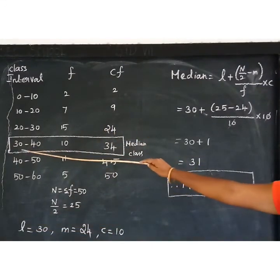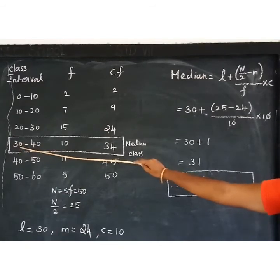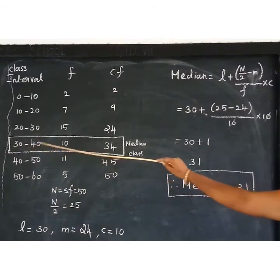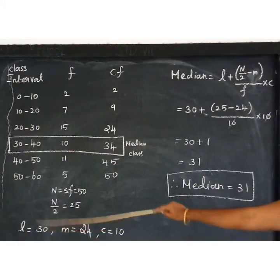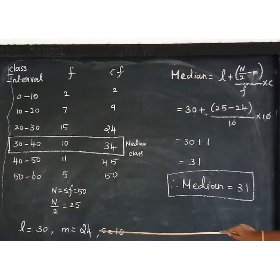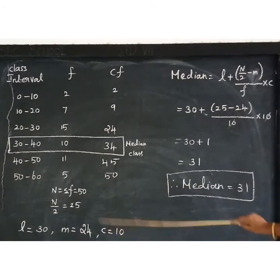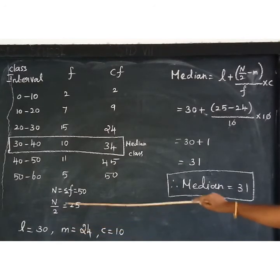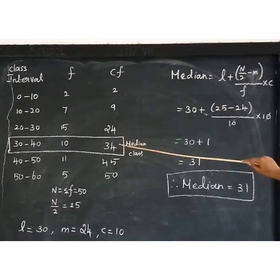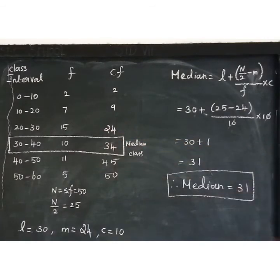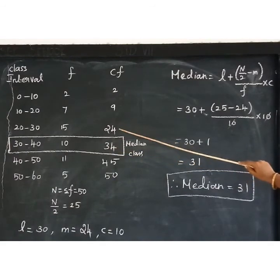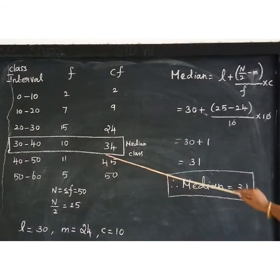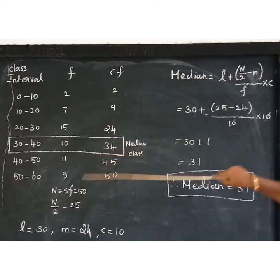L is equal to the lower boundary value of the median class, which is 30. C is the width of the class interval, that is 10. M is the cumulative frequency of the class preceding the median class. The cumulative frequency of the median class (30–40) is 34, and the one before it is 24. So M equals 24.